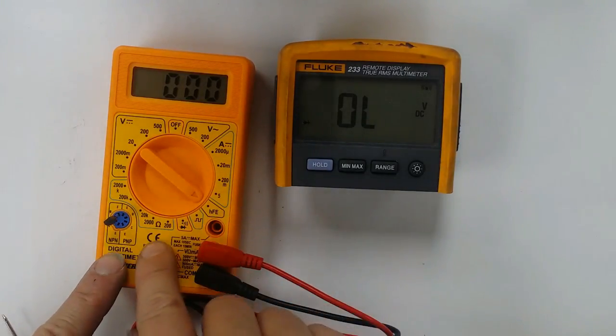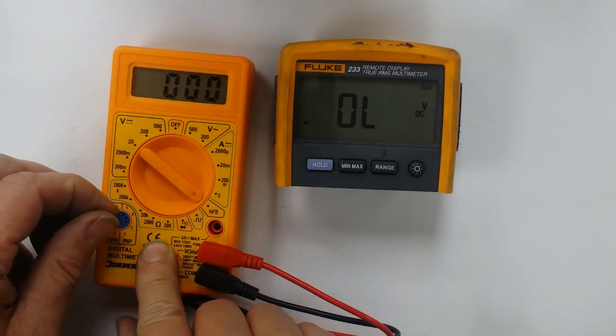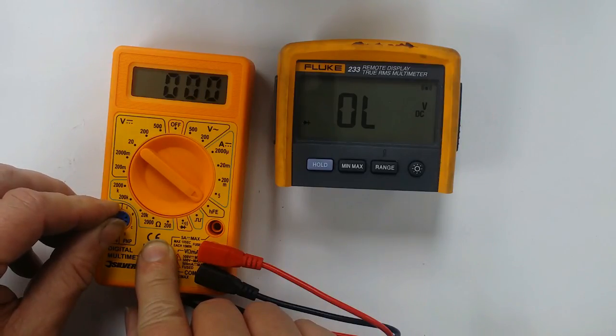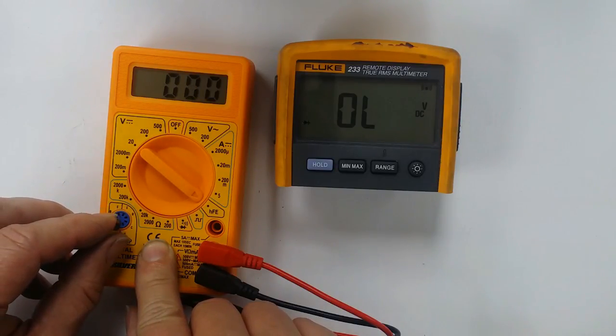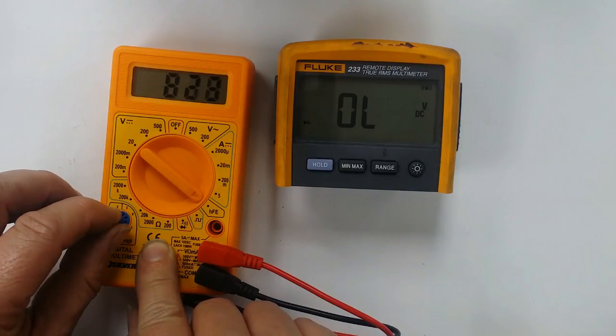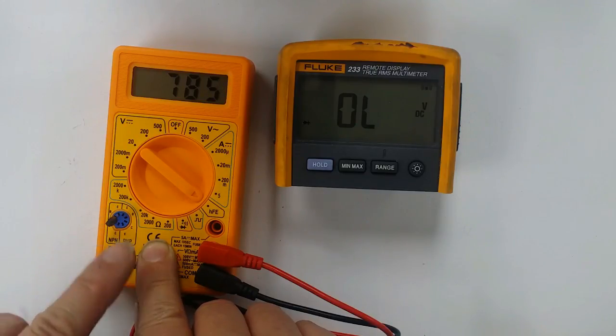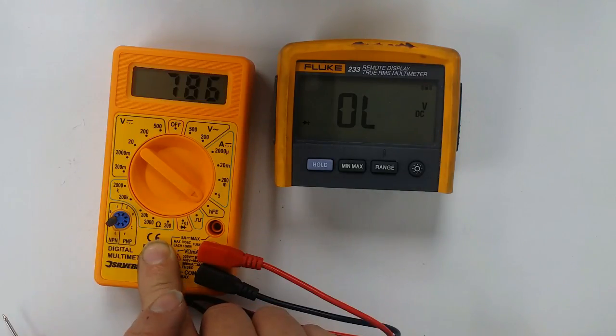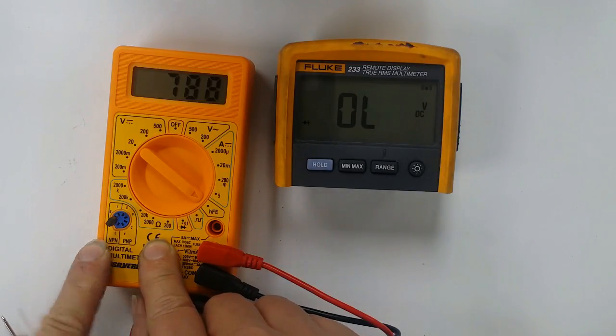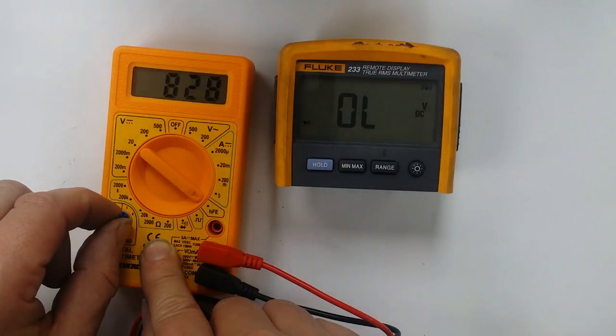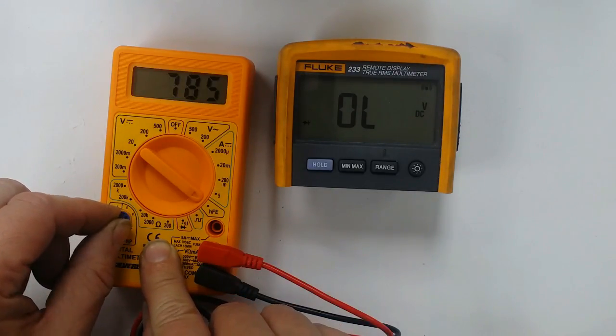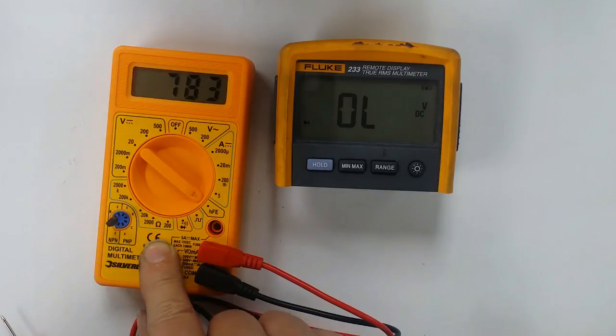I'm just trying the HFE. I have managed to get a reading. It's very, the actual connections in this plug are not very good at all. As you see, it's very dodgy. Saying that, it is reading the HFE of a transistor. So fair play to it. I can't remember the last time I actually needed to use that, but this function is here.